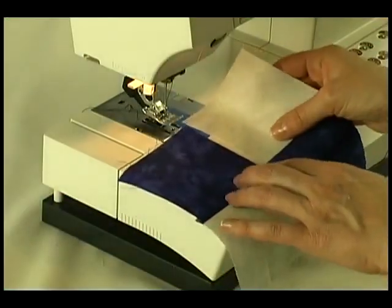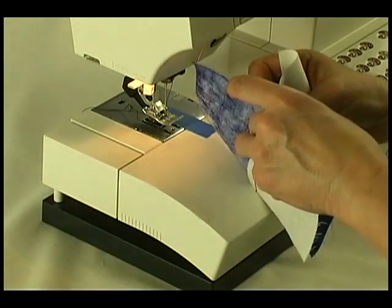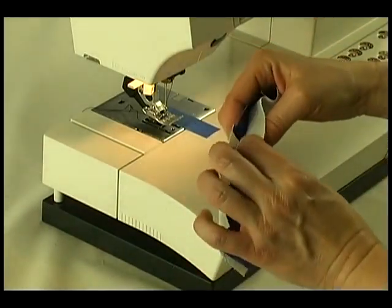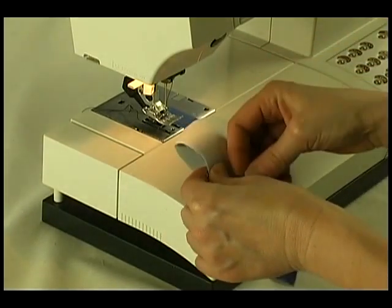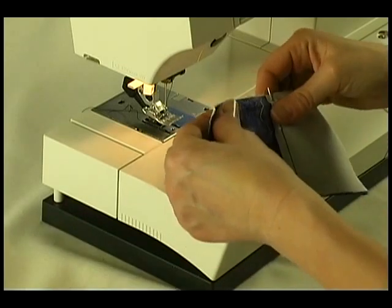With right sides together place a light and dark unit on a dark and light unit matching the seams. Nest the unit seam allowances together before sewing. This means the seam allowance of each unit is going in the opposite direction. Pin the unit together where the seams meet.